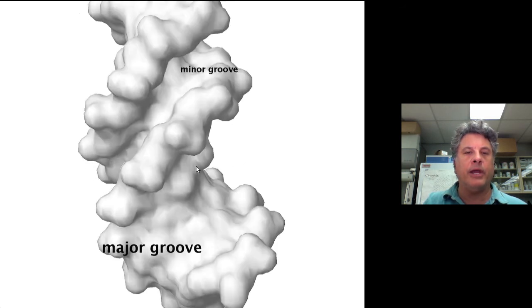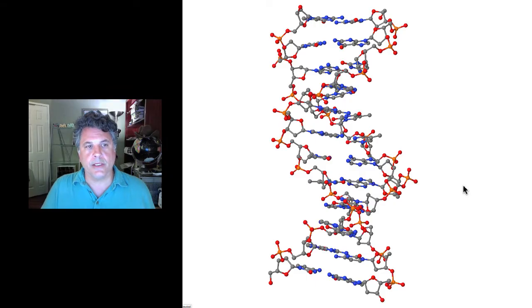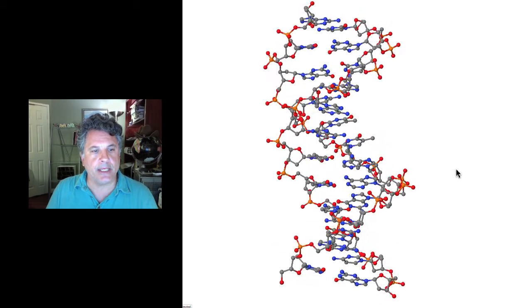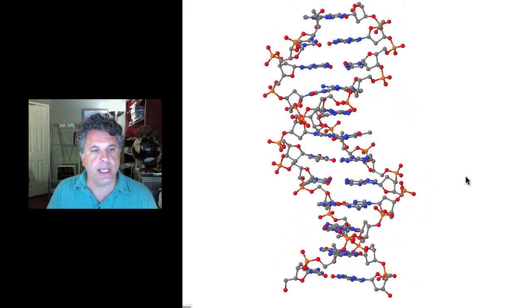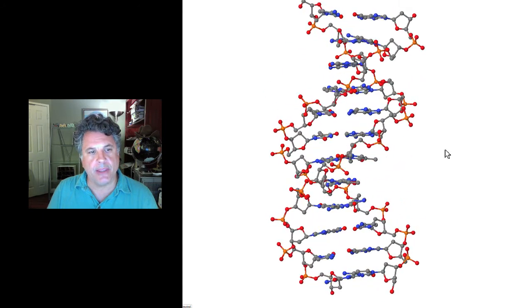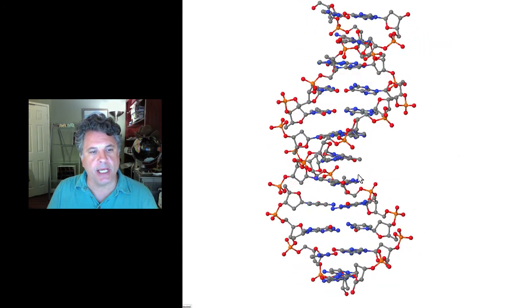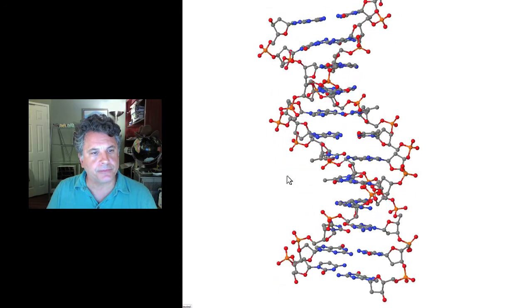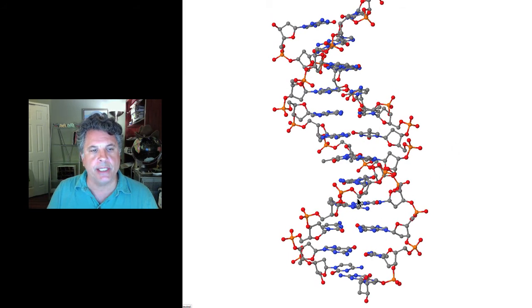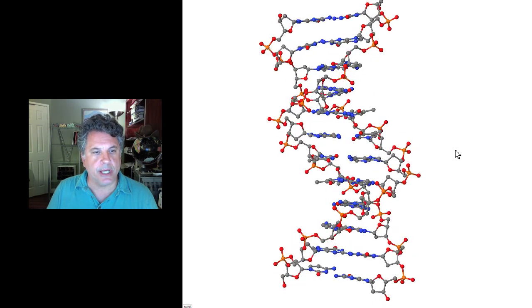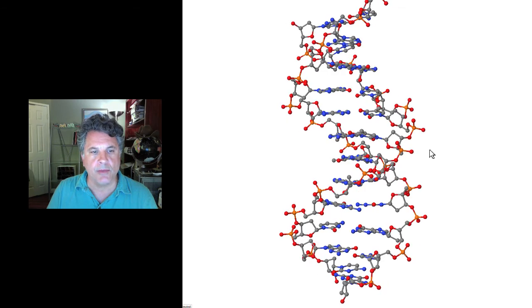Minor groove, 180 degrees opposite, major groove. So that concludes our treatment of DNA structure for the time being. The beauty of this molecule is really quite striking — it is an elegant molecule with wonderful symmetry, and there is something aesthetically pleasing about the form of the double helix that the human eye is drawn to. At the same time, in one sense it is also a very monotonous molecule: the double helix goes on and on in the same shape for very long stretches — many hundreds of thousands of base pairs in the case of a human chromosome.